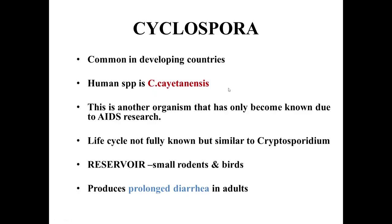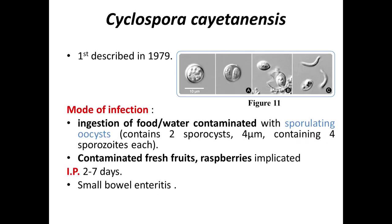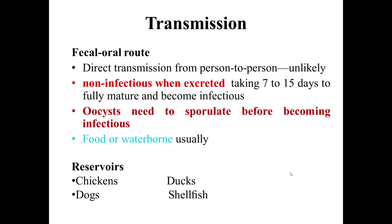Moving on to Cyclospora, which is also common in developing countries. The human species is Cyclospora cayetanensis. This organism came to be known after AIDS research, as many AIDS patients were found to be suffering from diarrhea. The life cycle is not fully known but is similar to Cryptosporidium, and the reservoir includes small rodents and birds. It produces prolonged diarrhea in adults. First discovered in 1979, the mode of infection is by ingestion of food or water contaminated with sporulating oocysts containing 2 sporocysts, each 4 microns in size containing 4 sporozoites, or contaminated fresh fruits — raspberries have been implicated. Incubation period is 2 to 7 days, leading to small bowel enteritis. Oocysts need to sporulate before becoming infectious, requiring 7 to 15 days.